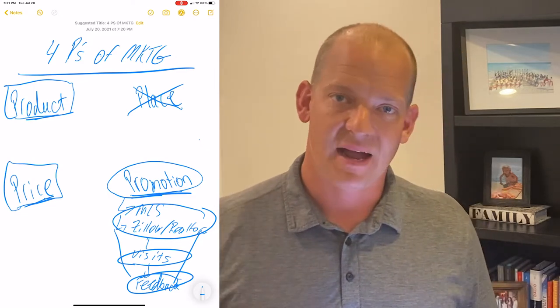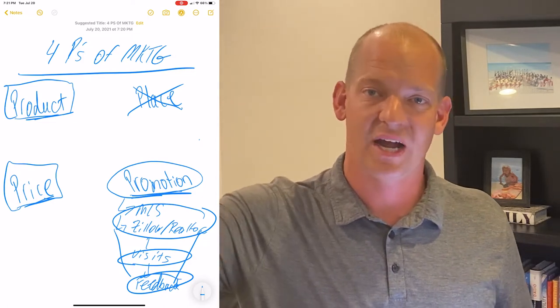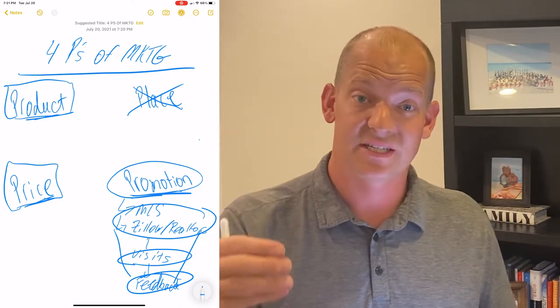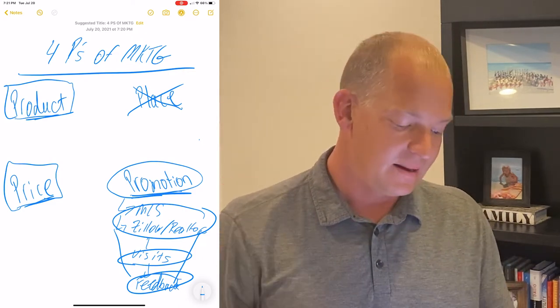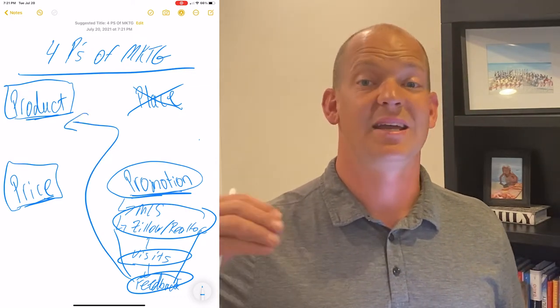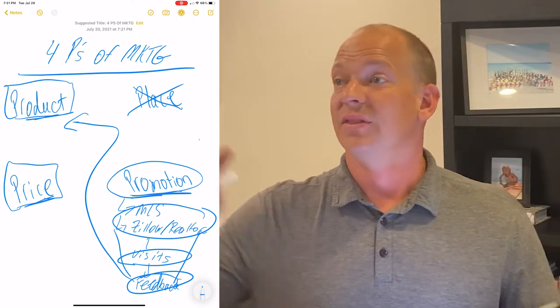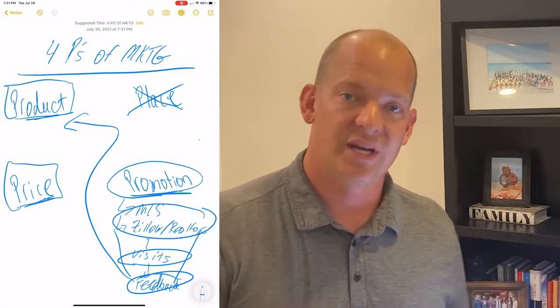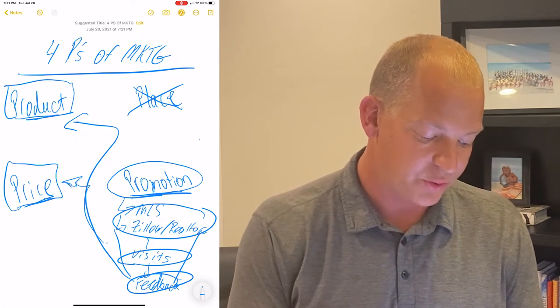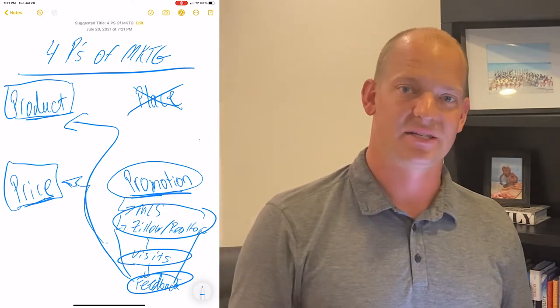We get the feedback and then we're objective with the seller. Look, I got great news. The promotion is working. We're getting great online traffic. That online traffic is converting to in-person visits and those in-person visits are not converting to offers, but they're converting to feedback. And the feedback is that we have product-related issues. The product, meaning it might not show that well, the experience of the showings isn't great, or there's something materially wrong with the home that we need to fix or that's scaring buyers. Or maybe we get feedback that it's price or some mix of the two. The product is deficient, so we've got to address the price.